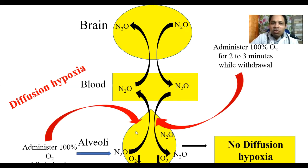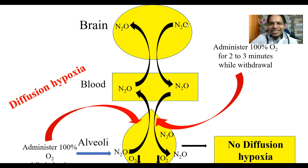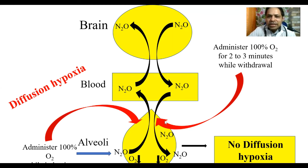To prevent this, we administer 100 percent oxygen alongside nitrous oxide so that even if it rapidly expands the alveoli during induction, the concentration of oxygen does not fall. When we withdraw the anesthesia, the rapid diffusion from brain to blood and blood to alveoli still occurs — but because we have already given 100 percent oxygen for 2 to 3 minutes, the decrease in oxygen concentration is compensated. This concept is called diffusion hypoxia.